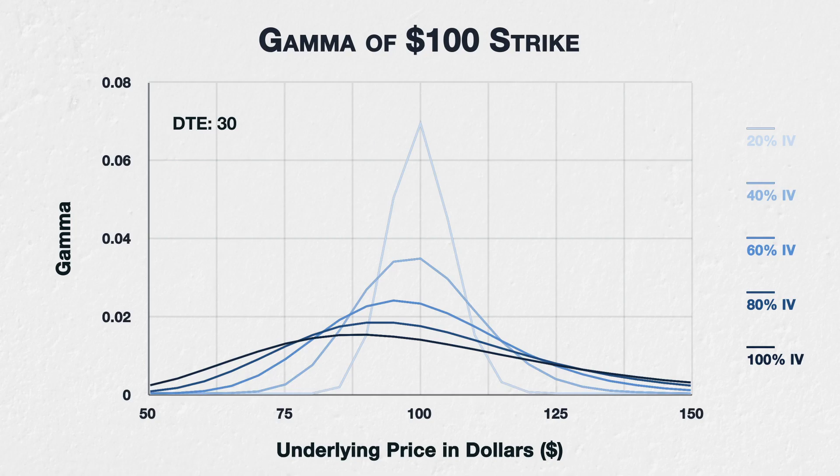The underlying price at which the gamma for this option peaks moves down in price. This means gamma peaks when the strike price is higher than the underlying price when implied volatility is increased. At 20% IV the peak is clearly when the option is at the money. By the time we get to 80% IV, peak gamma is actually when the underlying price is closer to $92 instead.